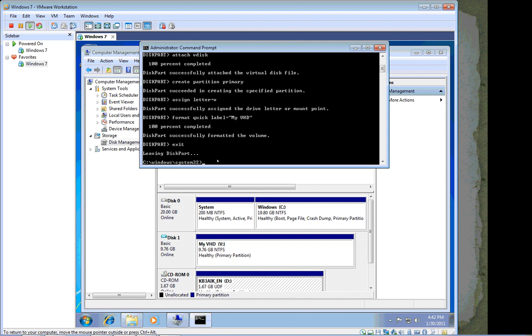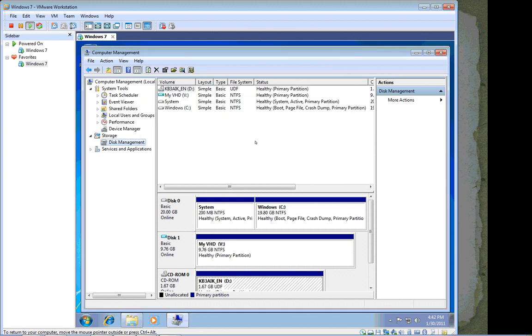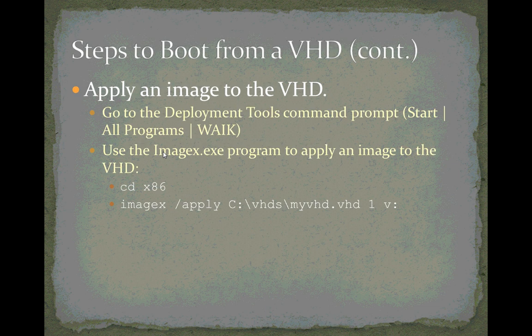I exit DiskPart and do a 'dir v:' — that's the drive letter for the virtual disk — and there it is: empty, but successfully created. I've partitioned it using 'create partition primary', assigned a drive letter, and formatted it, all within DiskPart. The virtual hard disk is now ready. The next thing I'm going to do is apply a Windows image to that virtual hard disk so we can store an operating system on it and boot to it — and we will do that in the next video.